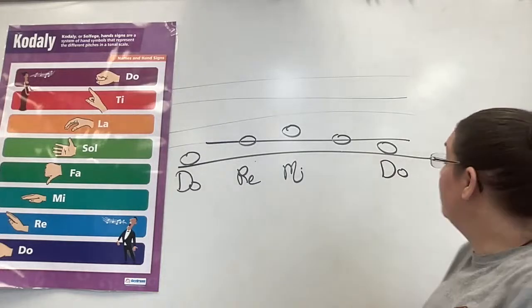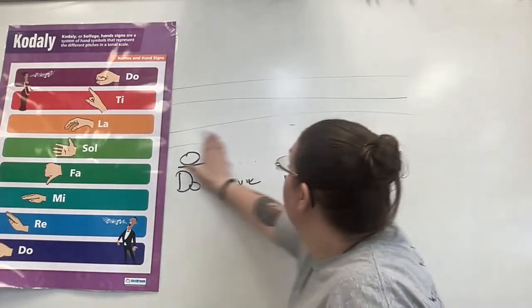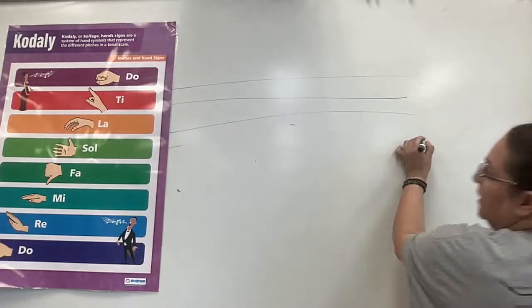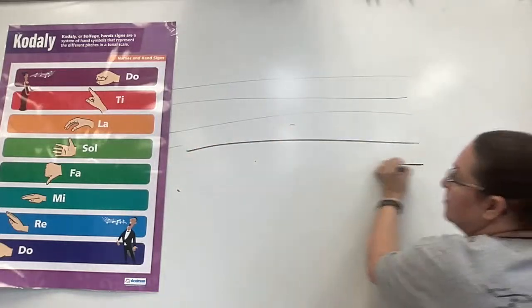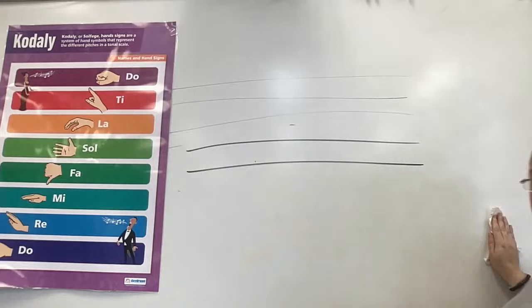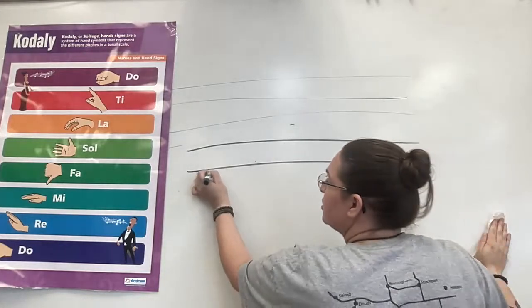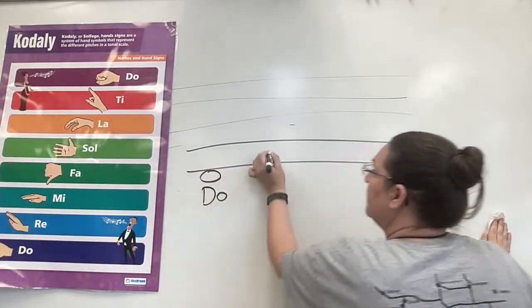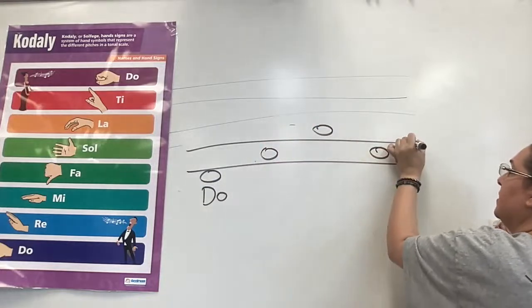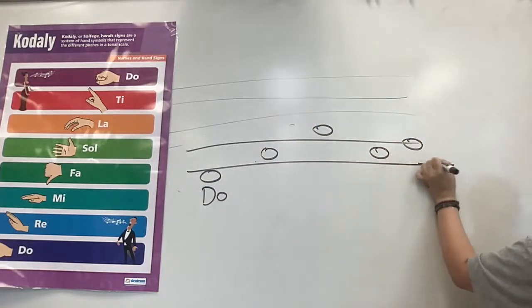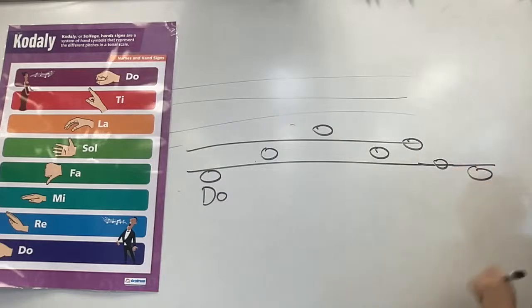Now, where it gets more fun and more complex is when we start skipping the scale. Because not all music is that simple, right? So if this is Do, let me write a couple notes up here. This is very common as well. And we're always going to start and end on Do for this exercise. So this is Do.